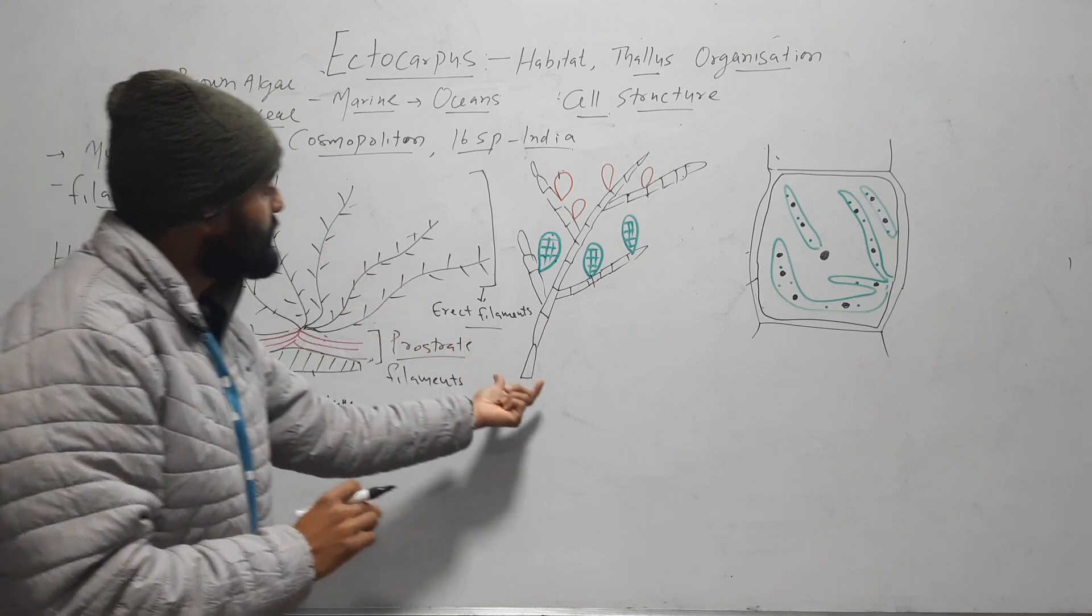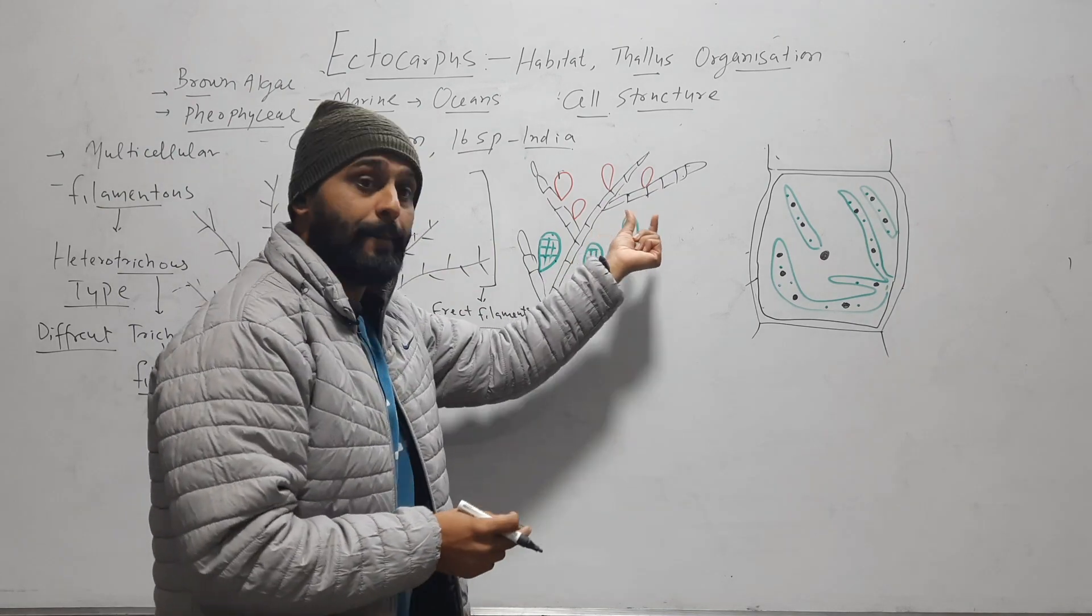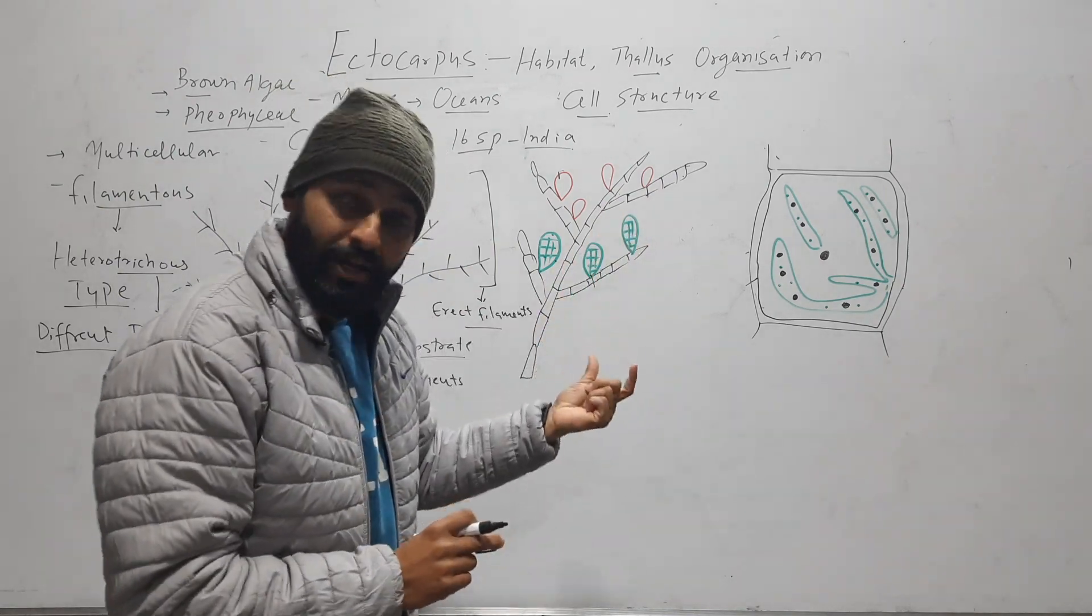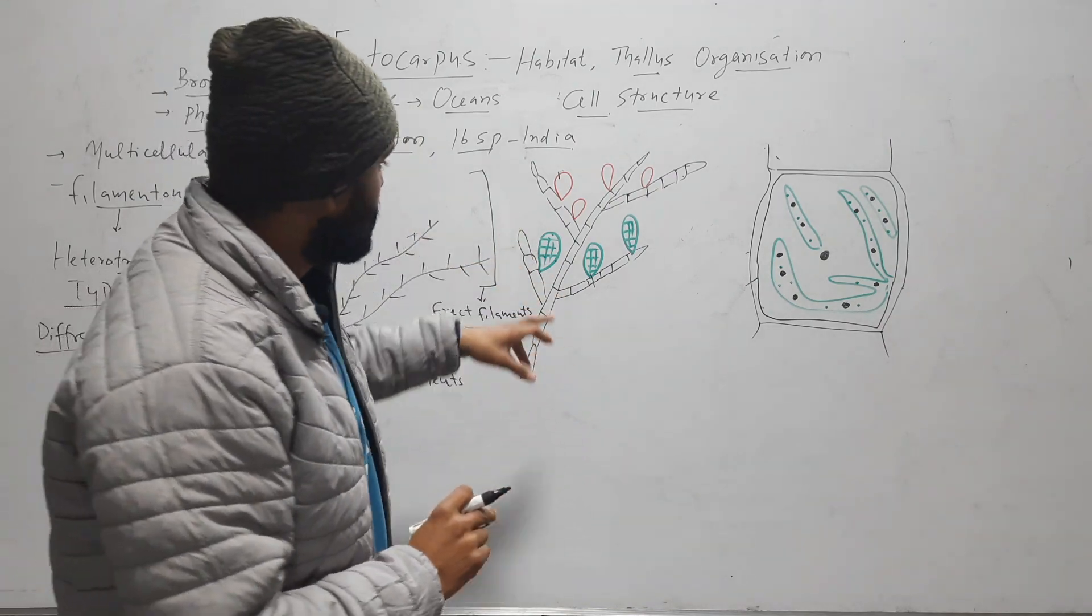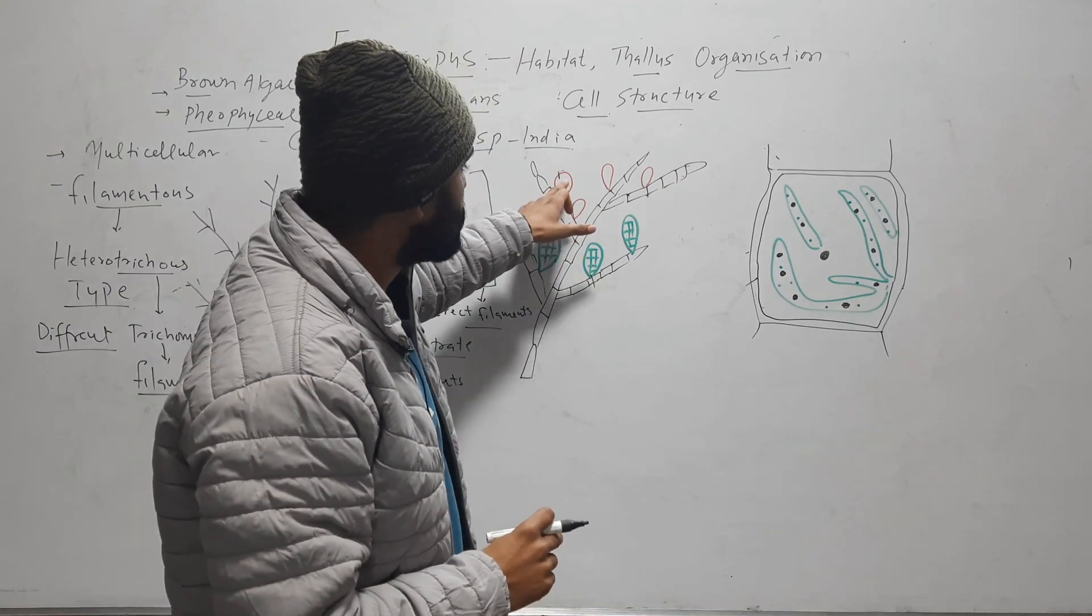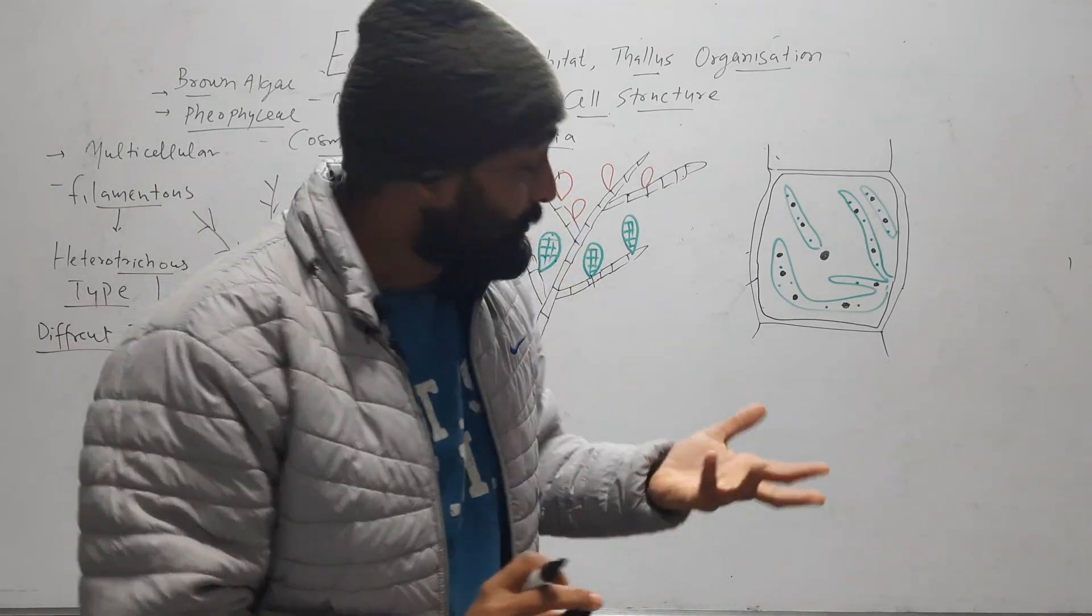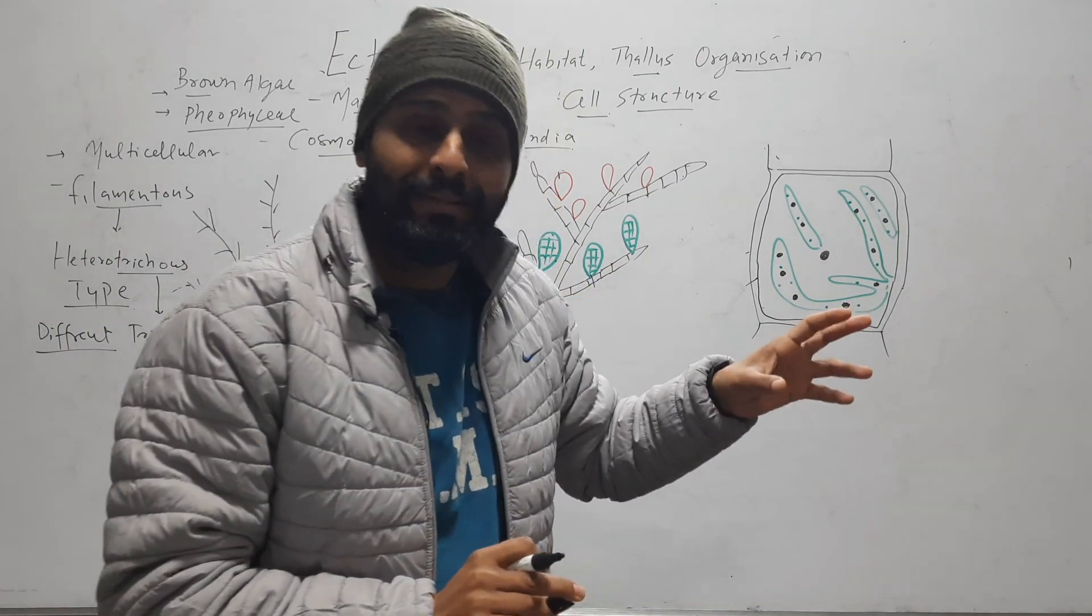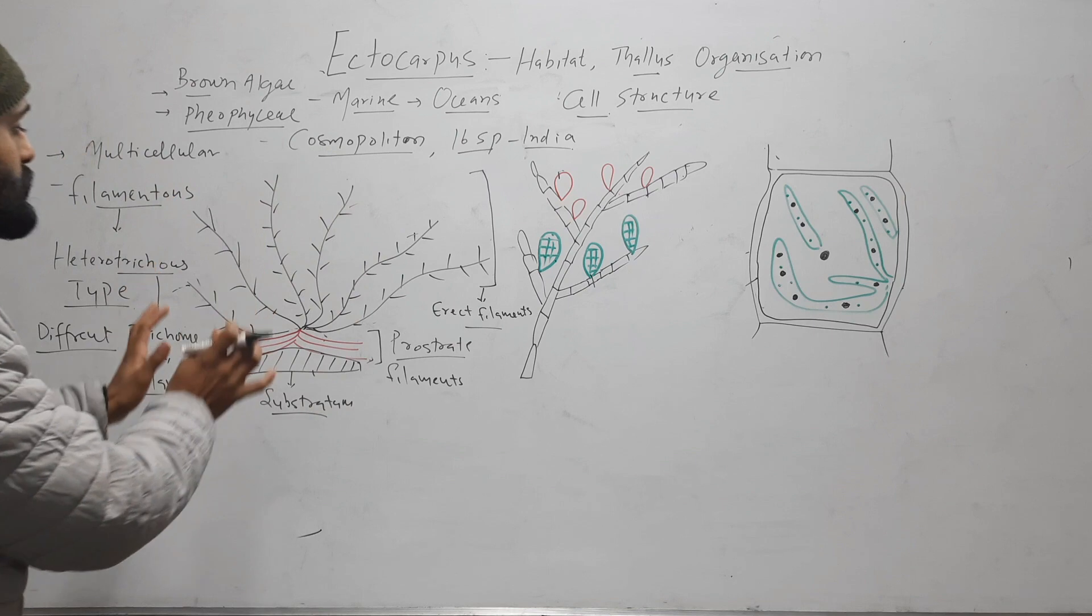So this filament is enlarged view of this filament. Here you can see that filament, this filament is branched and multicellular and it has sporangia. These green color sporangia are plurilocular sporangia and these red color sporangia are unilocular sporangia. They are meant for reproduction. We will discuss about them in detail in another video.